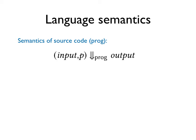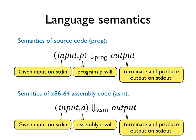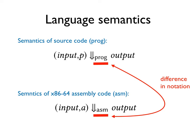Moving on to the semantics. For the source semantics, we have a judgement which is to be understood as follows. Given input called input on standard in, program p will terminate and produce output called output on standard out. For the target semantics, we have a similar judgement with similar meaning. Note that the subscript, prog and asm, indicate which semantics we are talking about.